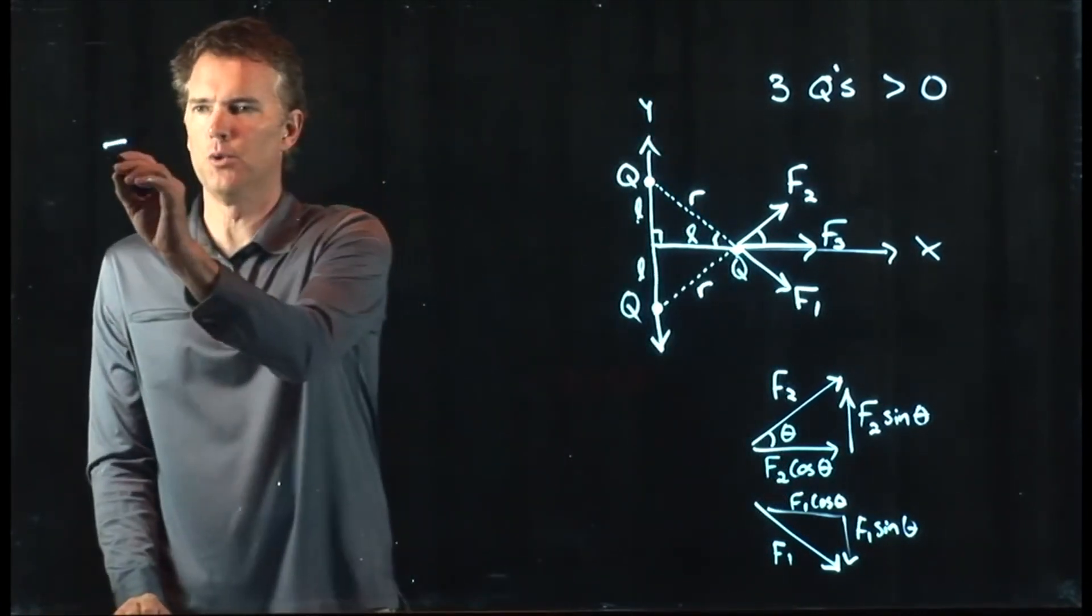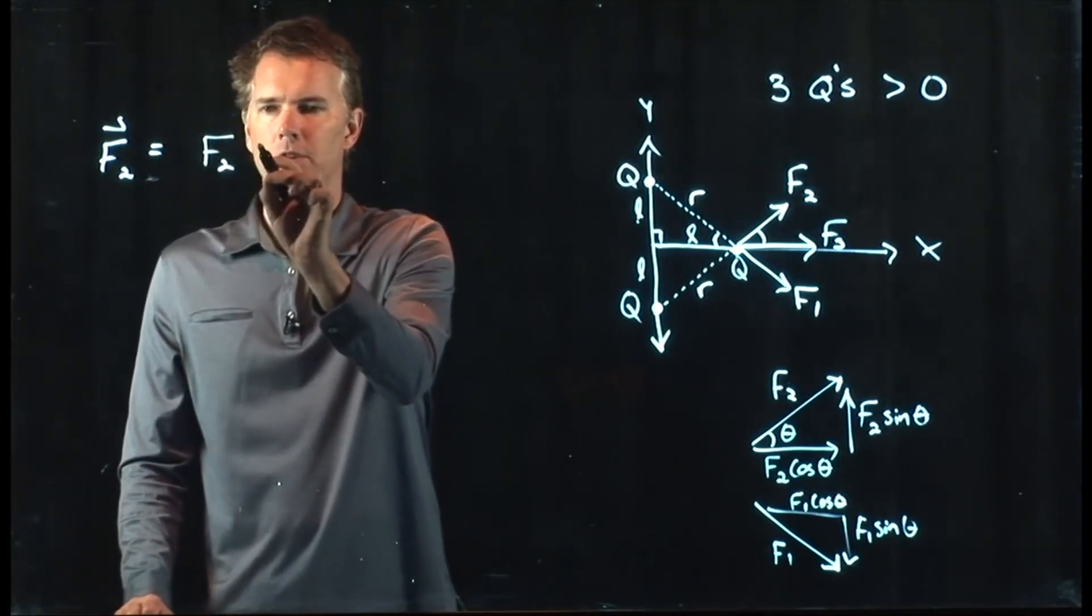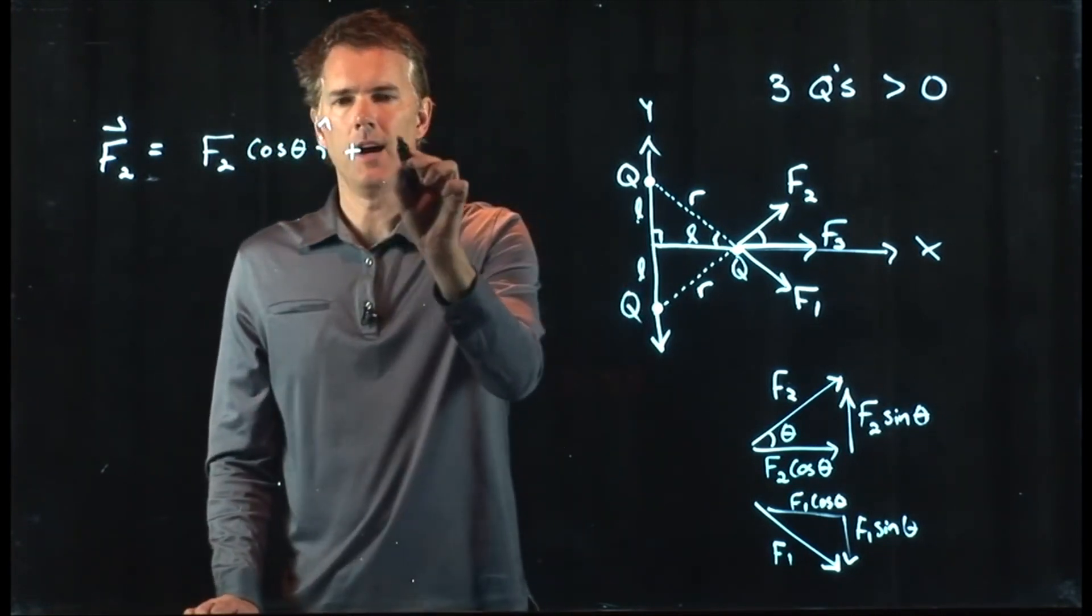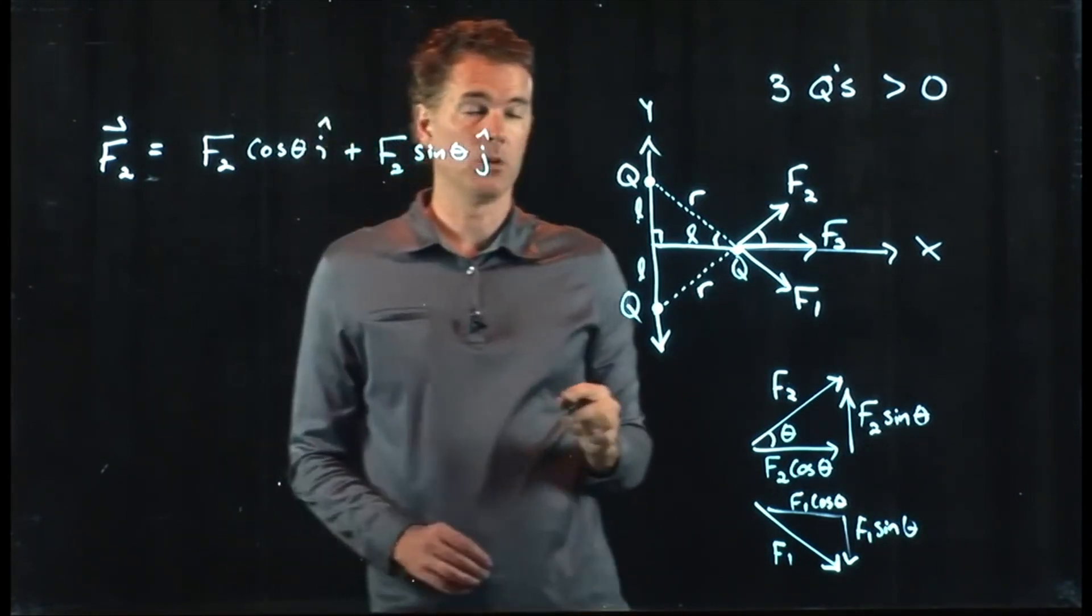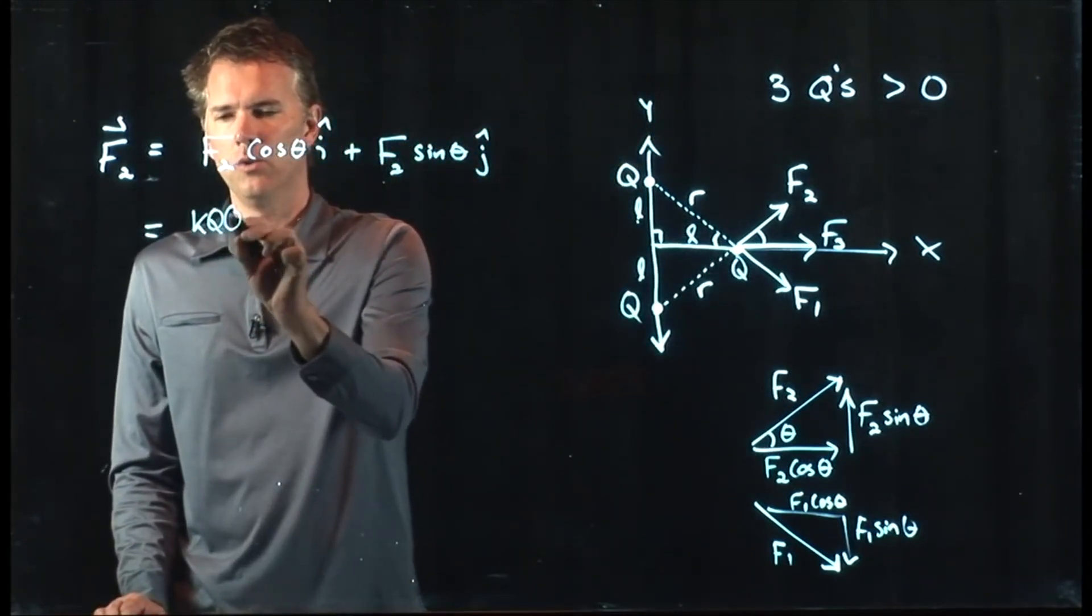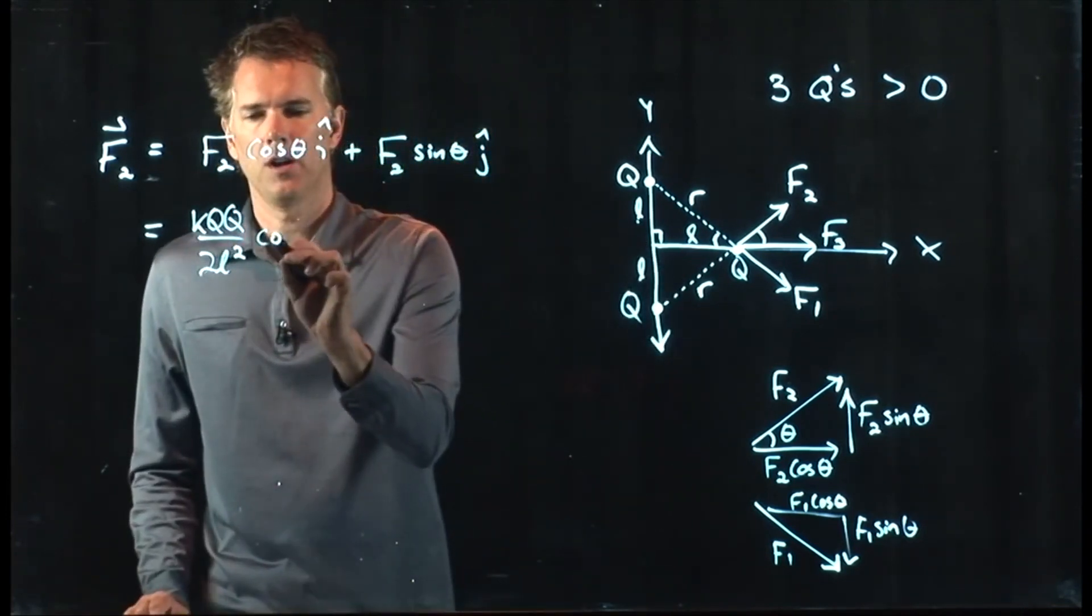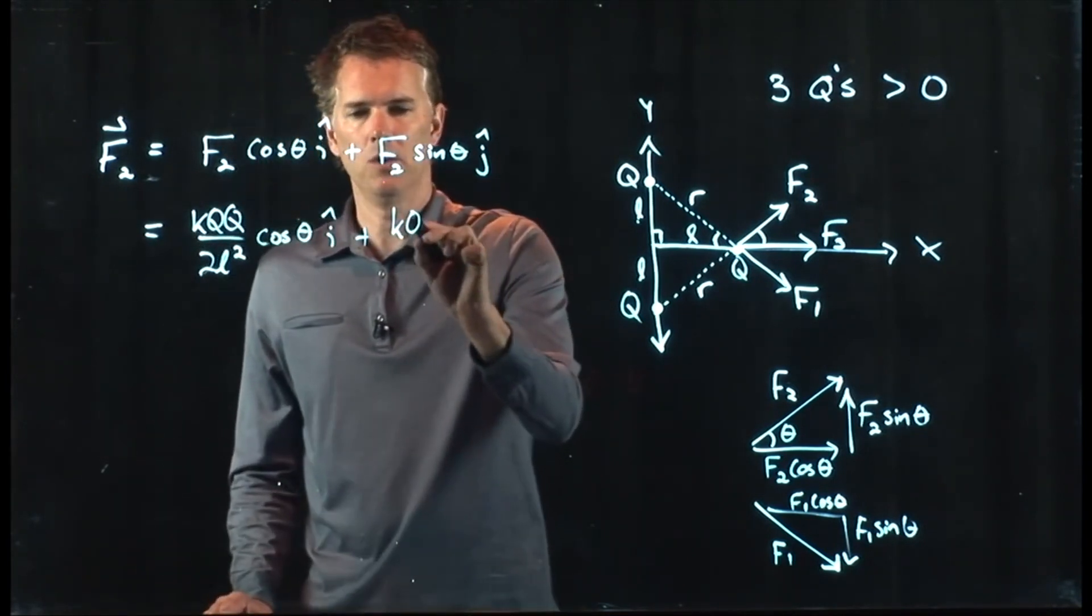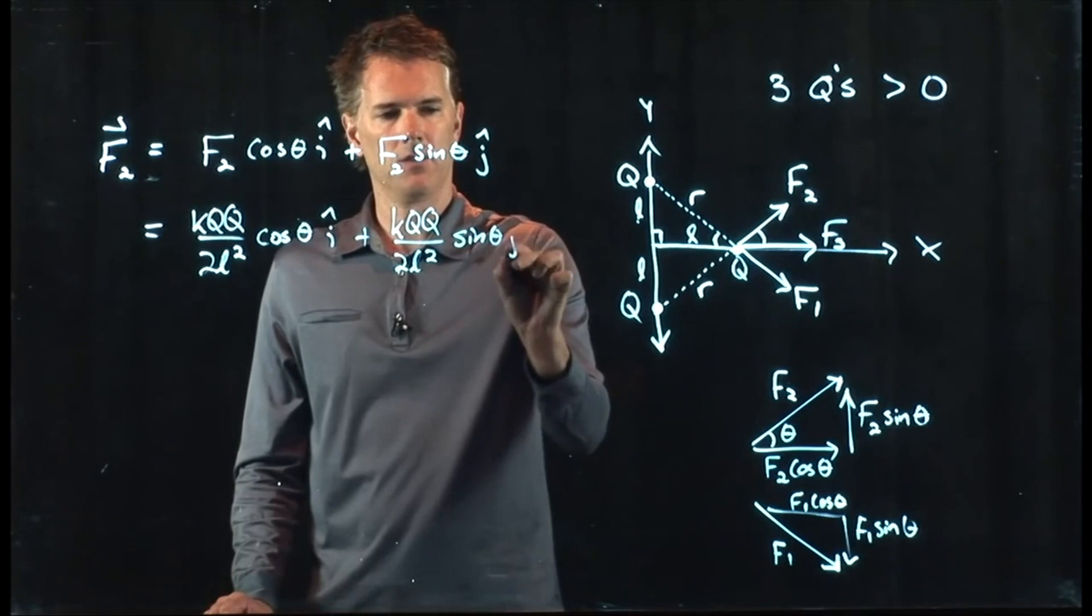F2 as a vector is what? It is the magnitude of F2 cosine theta in the x direction, which we call I hat, plus F2 sine theta in the y direction, which we call J hat. And we know exactly what F2 is. It's KQQ over 2L squared. And then we have cosine of theta I hat, plus KQQ over 2L squared, times sine theta J hat.